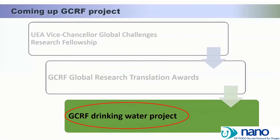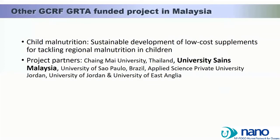After the GRTA project, the next coming GCRF project we are working on is a drinking water project. This project will involve the current partners — Swinburne University Sarawak, UMT, and UEA — and we are also going to cooperate with WWF Malaysia. University Science Malaysia is also working on a sub-project under GRTA on child malnutrition.